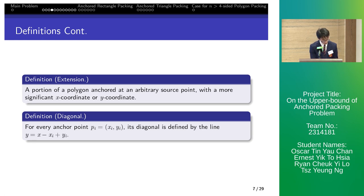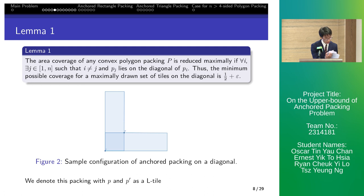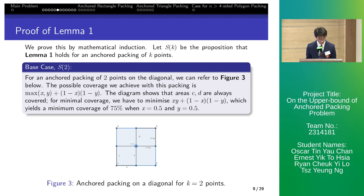The area coverage of any convex polygon packing P is reduced maximally if for all i exists point j that is not equal to i and lies on the diagonal of point i. The minimax possible coverage on diagonal is 1 half plus epsilon. This is an L tile formed on the diagonal of P with P' with equal horizontal and vertical extensions. We prove this lemma by induction.